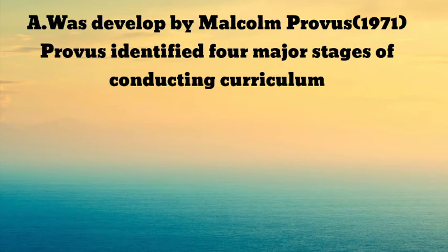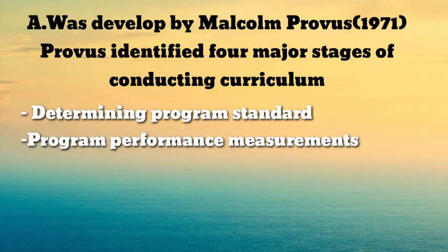The first model was developed by Malcolm Provus in 1971. Provus identified four major stages of conducting curriculum evaluation. The first stage is determining program standards — it identifies how the quality of evaluation will be judged. They can also use planning and evaluation as well as meta-evaluation, which means evaluating the evaluation itself. Many organizations have guidelines which address issues of quality and ethics together.